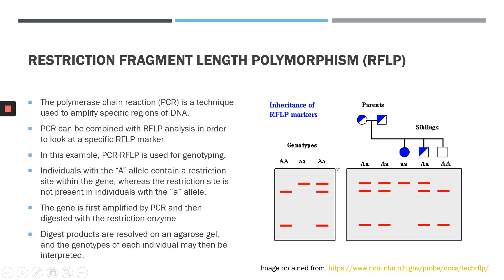In a heterozygote, you would see three fragments because the individual has the capital A dominant allele on one chromosome and the recessive allele on the other. So you'd see three bands in an individual who is a heterozygote. This principle can therefore be used to genotype individuals: depending on the alleles present, they would display one single band for a recessive genotype, two bands for a dominant genotype, and three bands for a heterozygous genotype. Therefore RFLP can be used to genotype individuals based on the presence or absence of restriction sites.